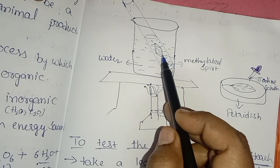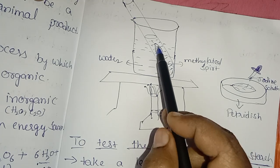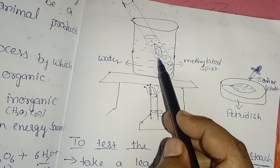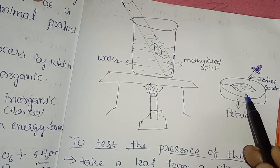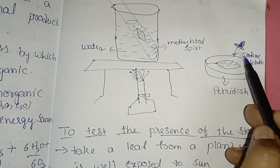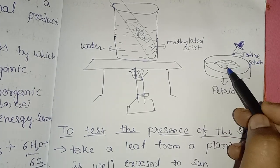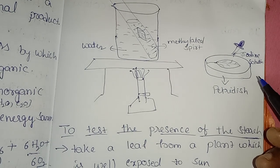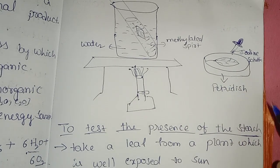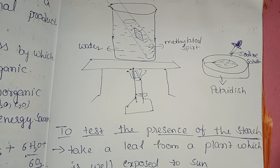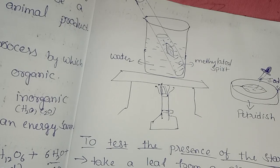After heating in the water bath, the leaf turns pale yellow or pale white. Carefully remove it with forceps and spread it in a petri dish. Apply tincture iodine to the leaf. The leaf turns blue-black, indicating the presence of starch. This confirms that starch is prepared in the leaf during photosynthesis.